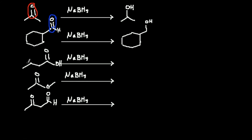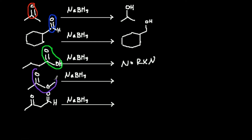The next compound is butanoic acid — a carboxylic acid. Will sodium borohydride reduce a carboxylic acid? The answer is no. Sodium borohydride only reacts with ketones and aldehydes, so with a carboxylic acid we have no reaction. Moving to the next one: sodium borohydride is attempting to reduce an ester. Again, sodium borohydride only reacts with ketones and aldehydes, so esters will not react with sodium borohydride — this is again no reaction.